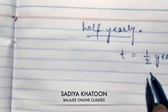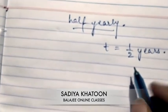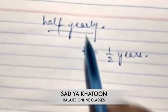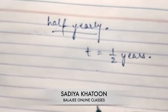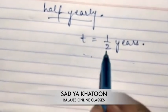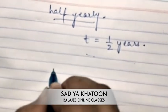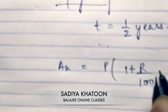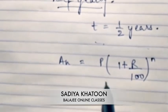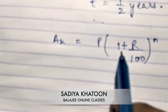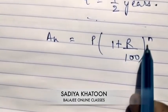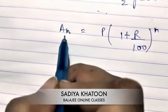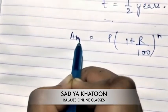When using the compound interest formula for half-yearly, you apply it twice. The formula is: A_n equals P times (1 plus r upon 100) to the power n, where P is the principal, r is the rate of interest, n is the number of years, and A_n is the amount at the end of n years.